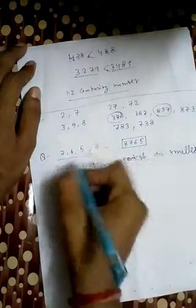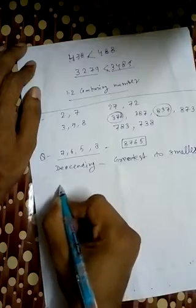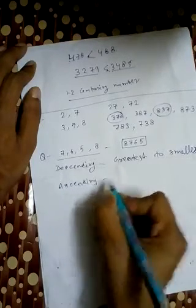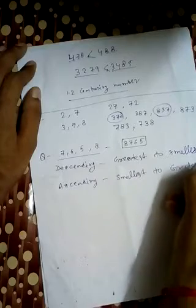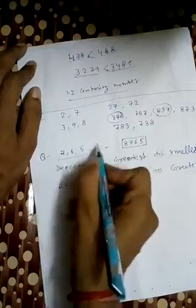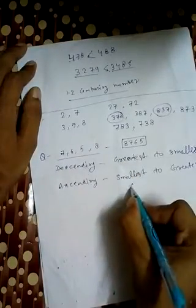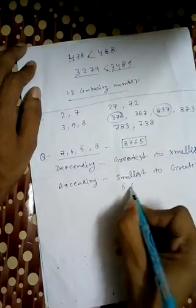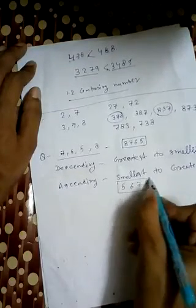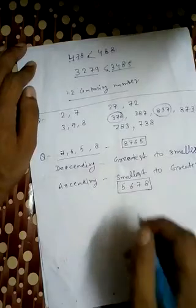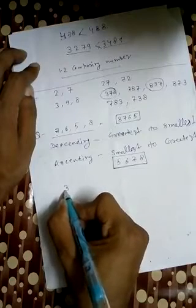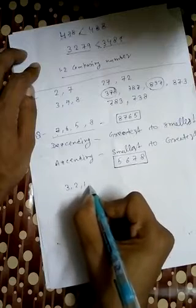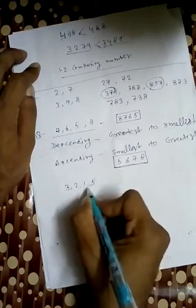If I ask you the smallest number using these four digits, we have to use ascending order. Ascending means smallest to greatest. So 5 will come first, then 6, then 7, then 8 — giving us 5678, which is the smallest number we can make with 7, 6, 5, and 8.